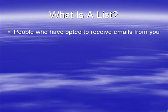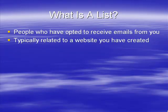Let's start by talking about what a list is. A list is people who have opted to receive emails from you. They may have visited one of your websites or any web 2.0 property or something similar that you own, and said 'I want some information' and filled in the form on your page — may have been a pop-up, an unblockable pop-up, or just a form on the page. Whatever it might be, they've said they want to receive emails from you. Usually it's related to a website that you've created.